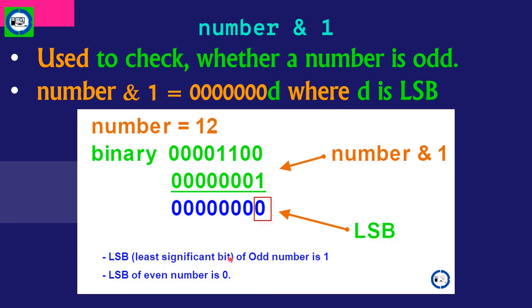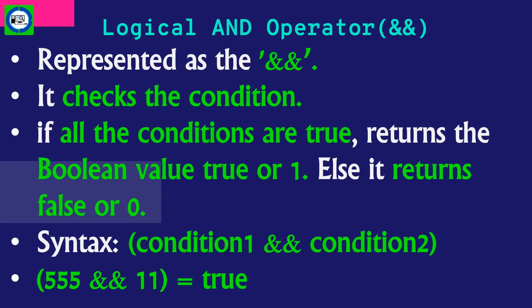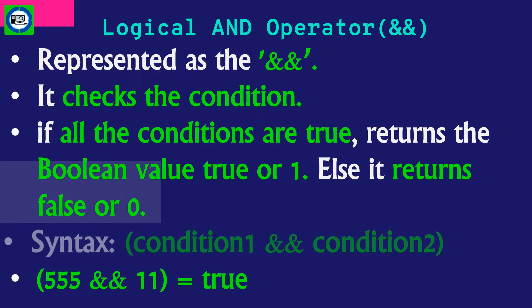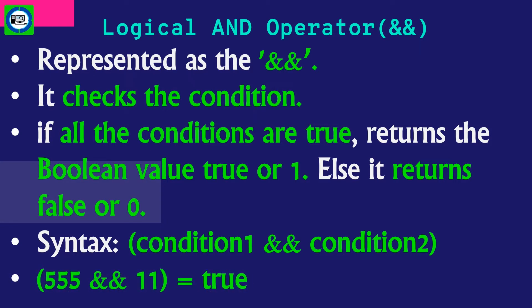If the least significant bit is 0, then the number is even. If the least significant bit is 1, then the number is odd. The logical AND operator is represented using the double ampersand symbol. It checks the condition by combining two or more operands within an expression. If all the conditions are true, it returns boolean true or 1; otherwise it returns false or 0. If condition 1 and condition 2 are combined and both values are non-zero, it will remain true.